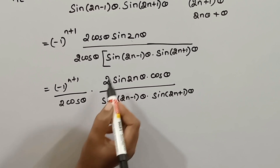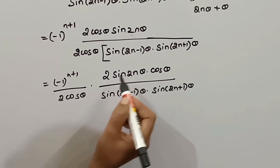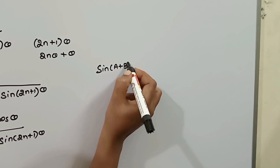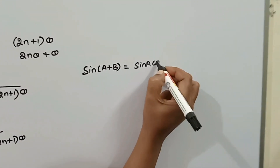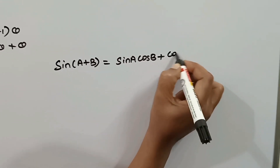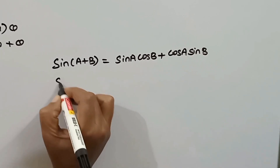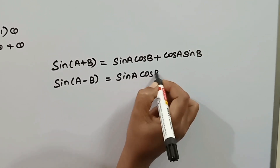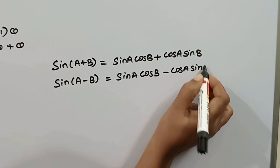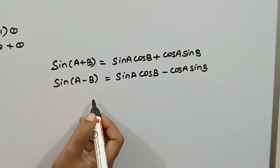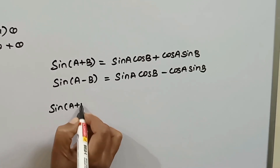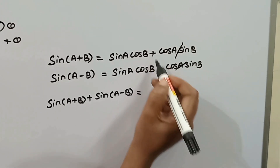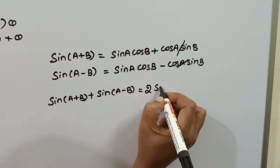Now the numerator has 2 terms by difference. The formula is 2 sin A cos B. We know the numerator using sin(A+B) and sin(A-B). We know sin(A+B) = sin A cos B + cos A sin B. We know sin(A-B) = sin A cos B minus cos A sin B. Adding these: sin(A+B) plus sin(A-B) equals 2 sin A cos B.